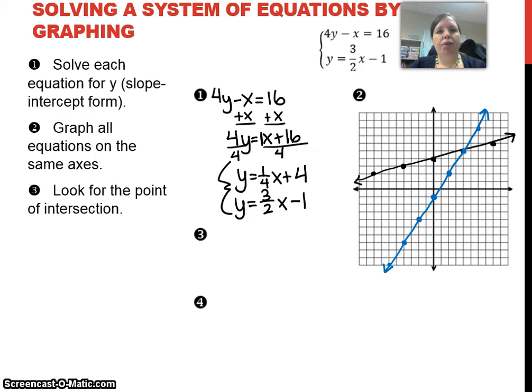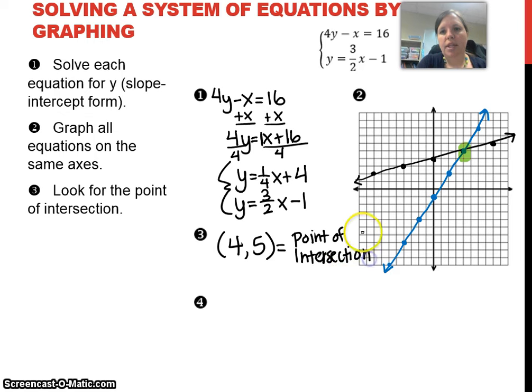Step 3: look for the point of intersection. My point of intersection is 4, 5. This is my point of intersection. So that would be my solution. My solution to the system is the point that satisfies both equations. At this point, I've found the solution.